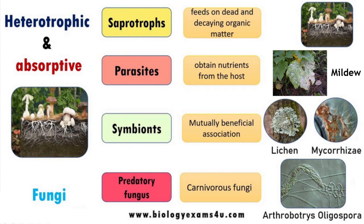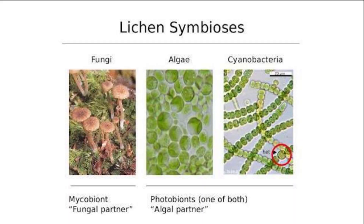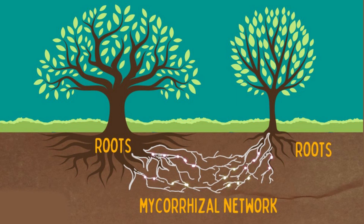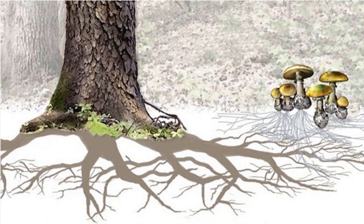Fungi derive all of their energy and growth materials from their growth medium through biochemical decomposition processes. Fungi are heterotrophs, able to feed on different substrates. Saprotrophic fungi feed on decaying matter, while symbiotic fungi live in mutualistic relationships, for example with algae in lichen or with trees in mycorrhizae.